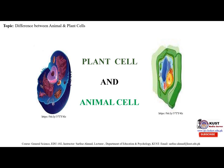The chloroplasts contain a green pigment, chlorophyll, that is responsible for the process of photosynthesis. The cell wall of the plant is made up of cellulose, and cellulose is a long linear polymer of several glucose molecules.